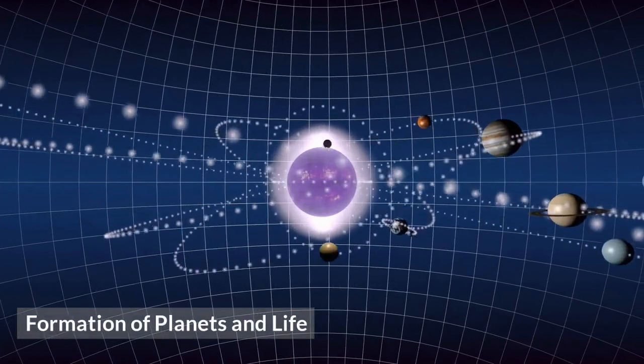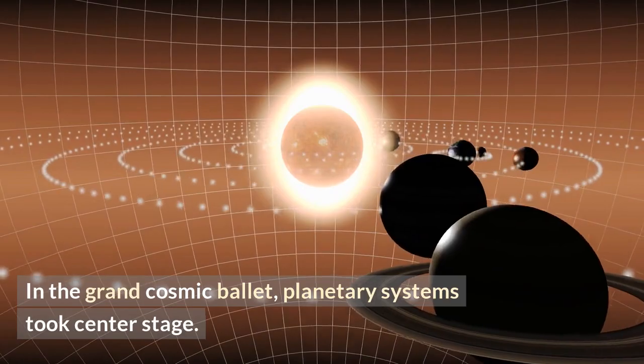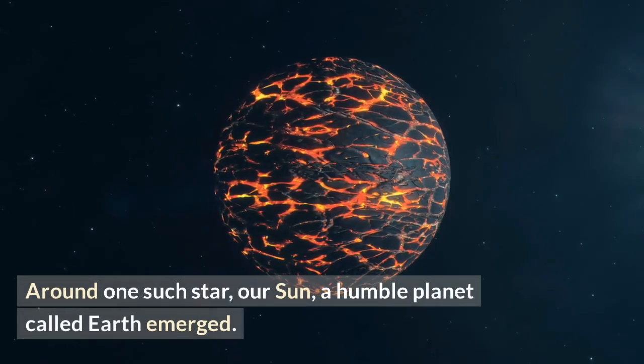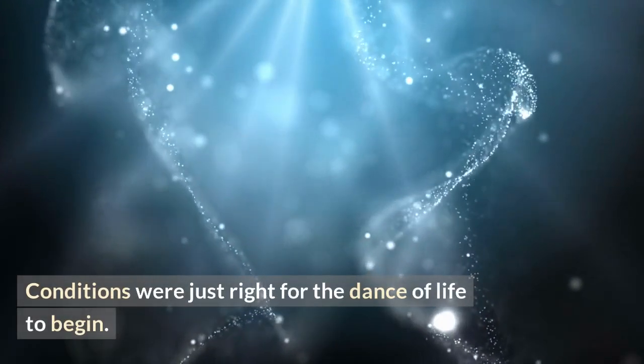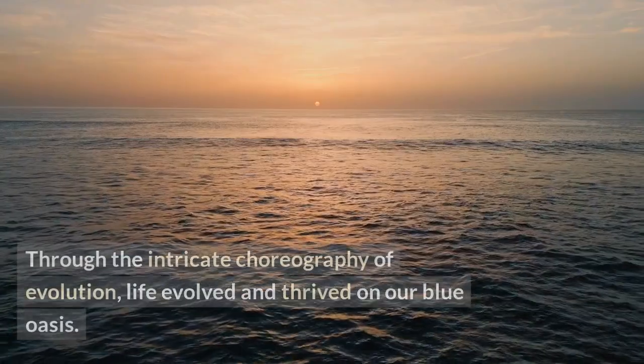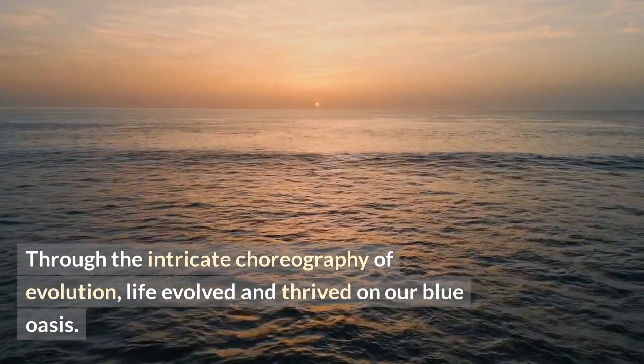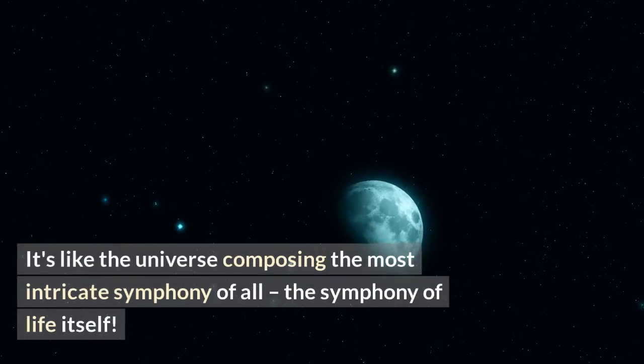Formation of Planets and Life. In the grand cosmic ballet, planetary systems took center stage. Around one such star, our sun, a humble planet called Earth emerged. Conditions were just right for the dance of life to begin. Through the intricate choreography of evolution, life evolved and thrived on our blue oasis. It's like the universe composing the most intricate symphony of all, the symphony of life itself.